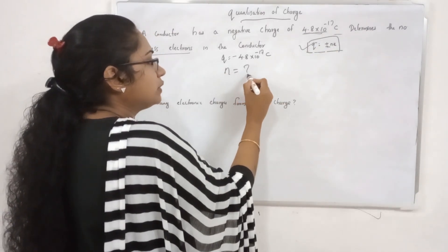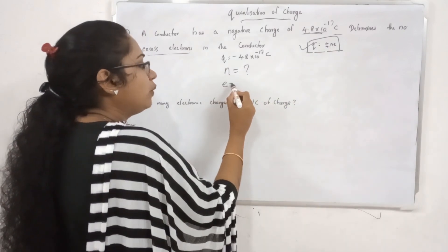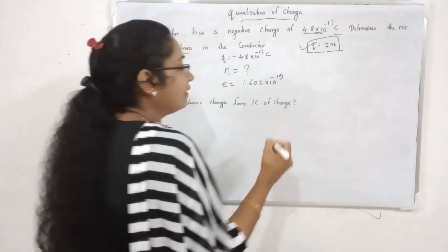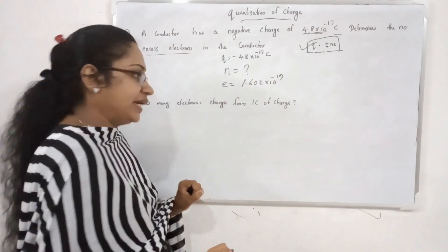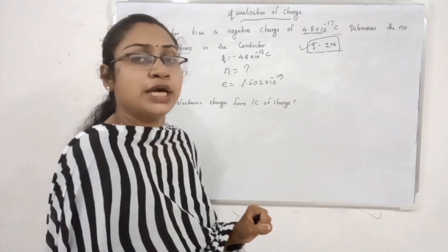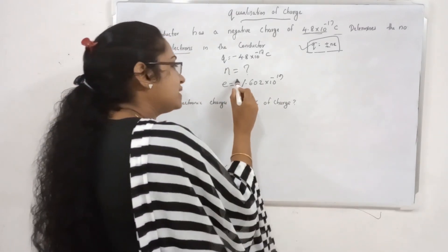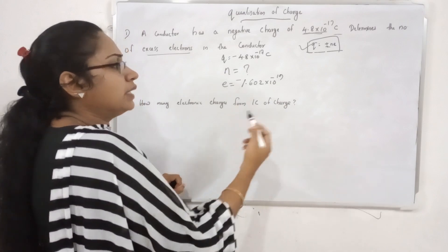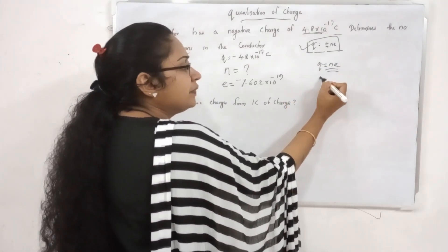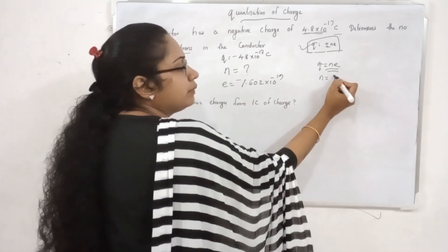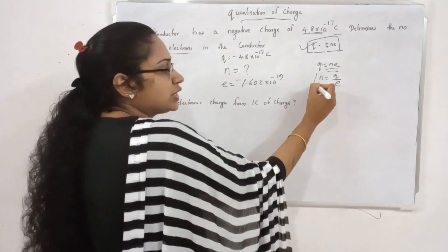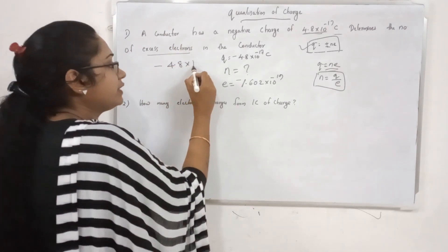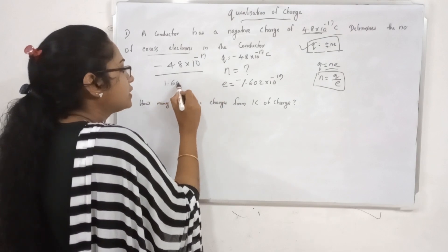The number n is equal to Q divided by e. We have the value of e = 1.602 × 10⁻¹⁹. The number of electrons equals minus 4.8 × 10⁻¹⁷ divided by 1.602 × 10⁻¹⁹.